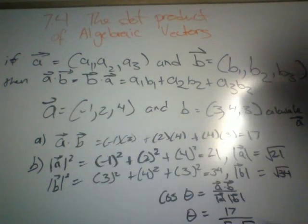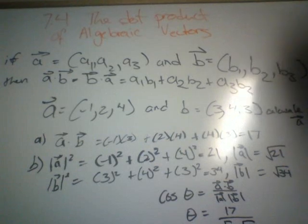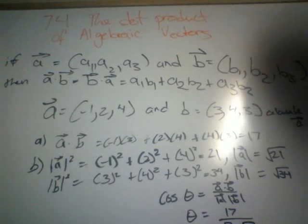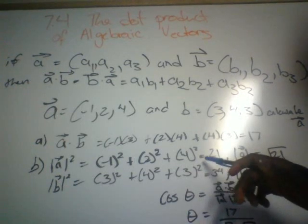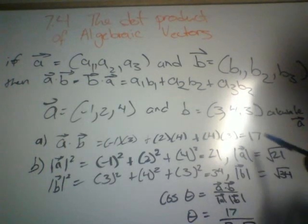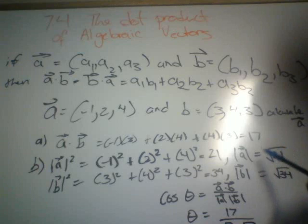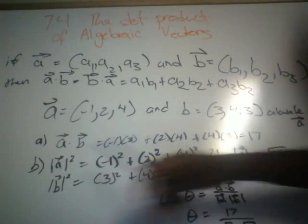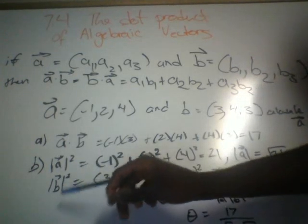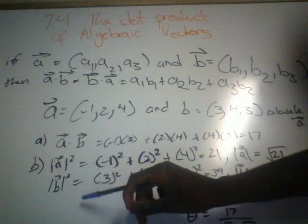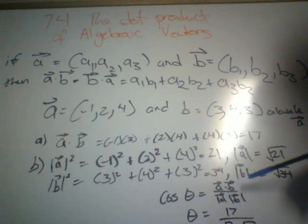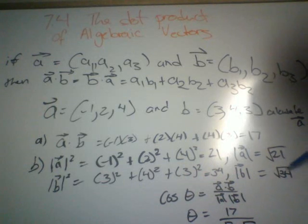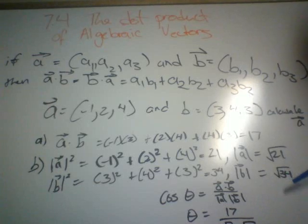Then we find the magnitude of A squared: negative 1 squared plus 2 squared plus 4 squared equals 21. We square root the value of 21 to find the magnitude of A. Then we find the magnitude of B squared: 3 squared plus 4 squared plus 3 squared equals 34. We find the square root to get the magnitude of B, which is square root of 34.